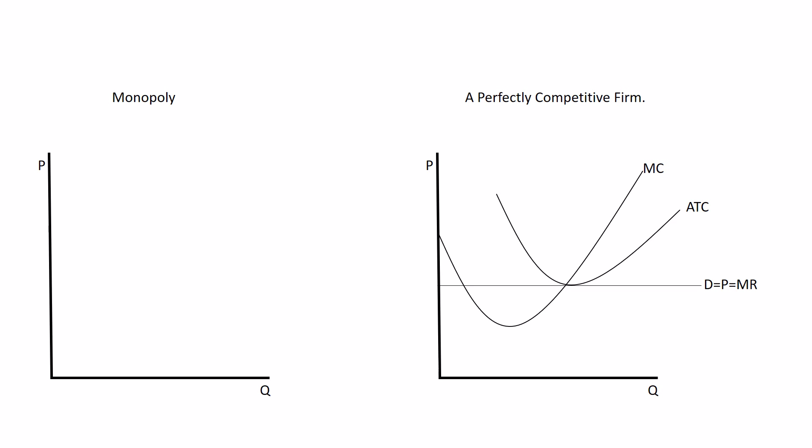A monopolist, however, does not have a perfectly elastic demand curve because a monopolist is not one of many firms. A monopolist is the only firm that serves its market. And so the market demand curve is the monopolist demand curve, and so it will be downward sloping.